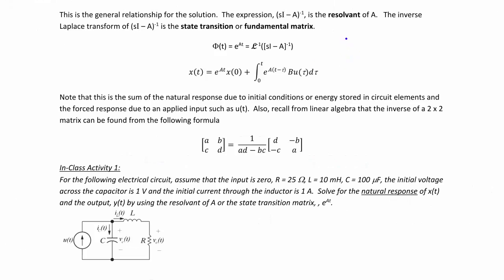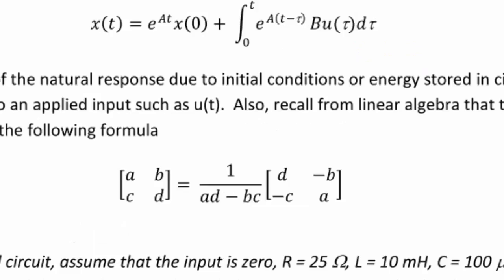Note that since y(t) = C·x(t), Y(s) = C·X(s). Also recall from linear algebra that the inverse of a 2×2 matrix [a, b; c, d] has determinant (ad - bc), so the inverse is 1/(ad - bc) times the matrix [d, -b; -c, a], where you swap the first and fourth elements and negate the second and third elements.